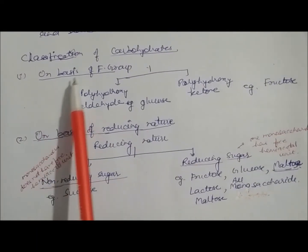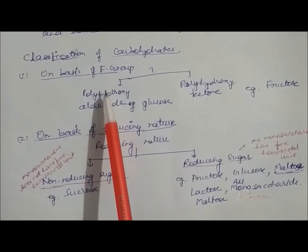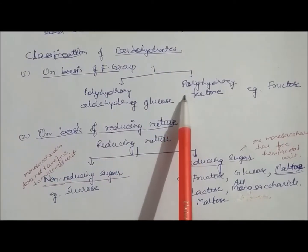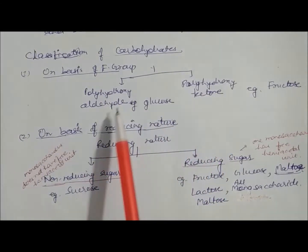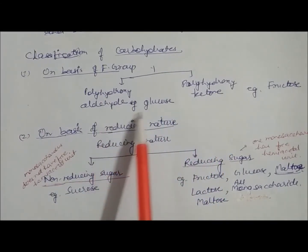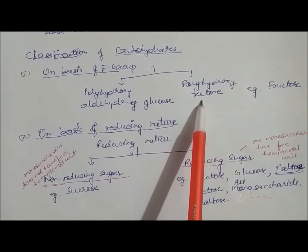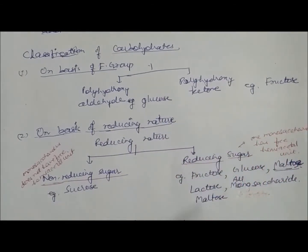On the basis of functional group, there are two types: polyhydroxy aldehyde and polyhydroxy ketone. Polyhydroxy aldehyde corresponds to glucose, while the ketonic type corresponds to fructose. This is the first classification.